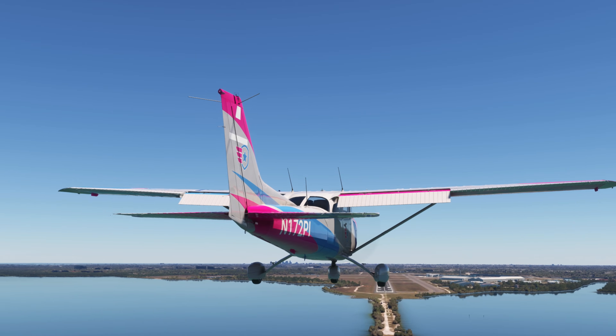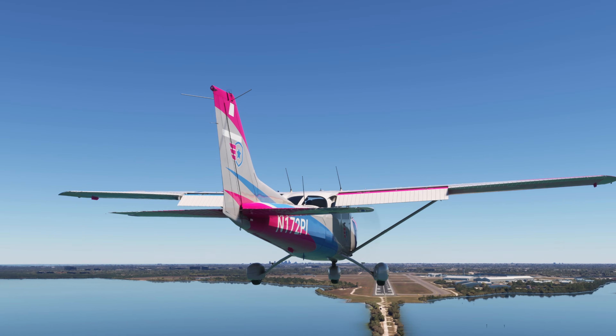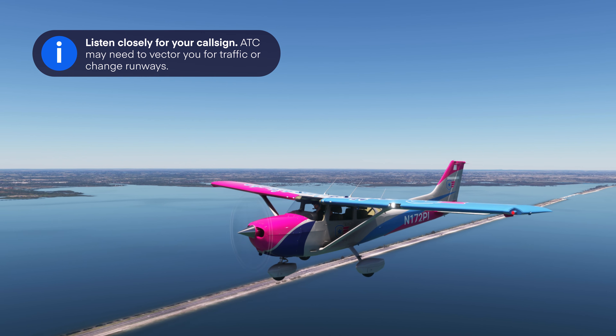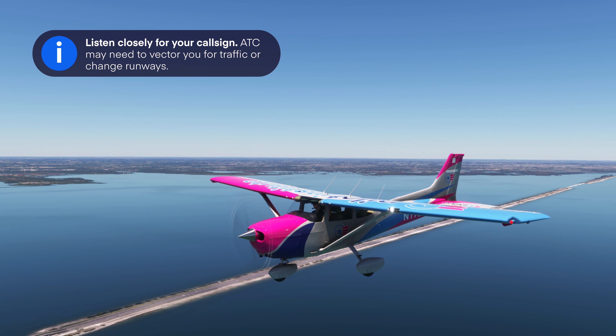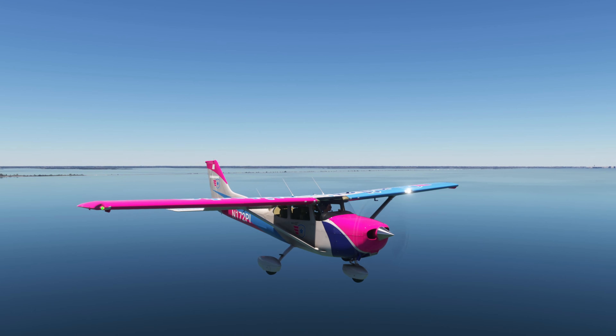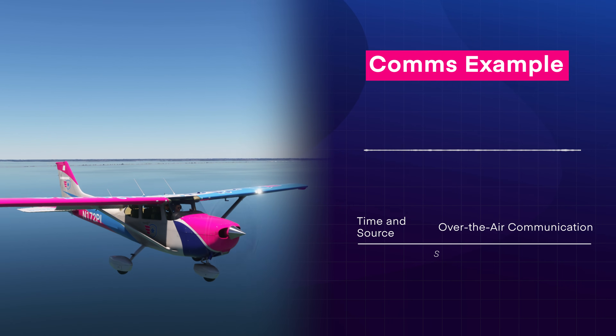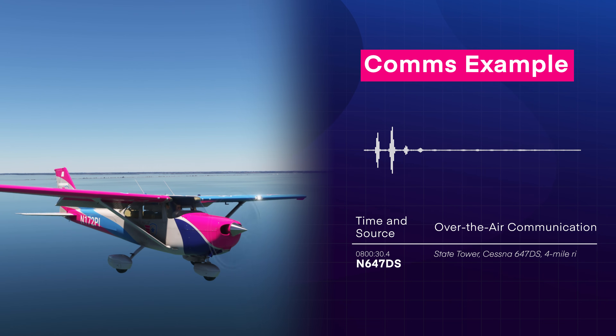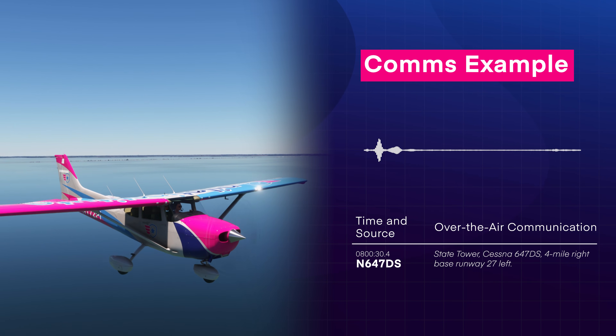As you make your way into the airspace, make a mental picture of the traffic. Are there airplanes in the pattern? Where exactly is that business jet on the long straight-in final? Yes, the tower is there to prevent collisions and ensure things run smoothly, but avoiding traffic is ultimately the pilot's responsibility. Listen closely for your call sign — ATC may need to vector you for traffic or change runways. When you're 4 miles out, check in with the tower as requested: 'State Tower, Cessna 647 Delta Sierra, 4 miles, right base, runway 27L.'